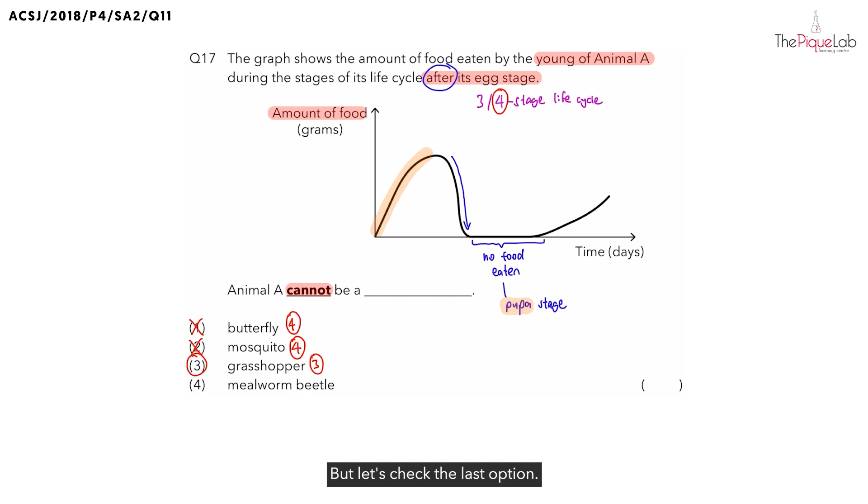But let's check the last option. Now, what about the mealworm beetle? How many stages does it have? Mealworm beetle has a four-stage life cycle. So option four is out. And the only possible answer is going to be option three.